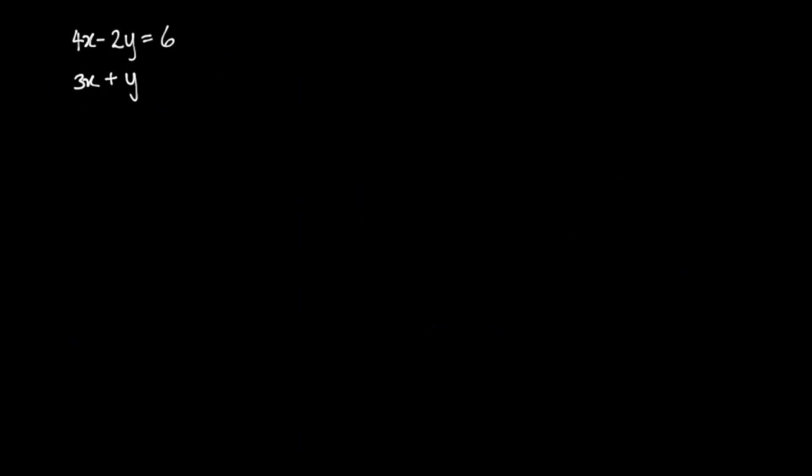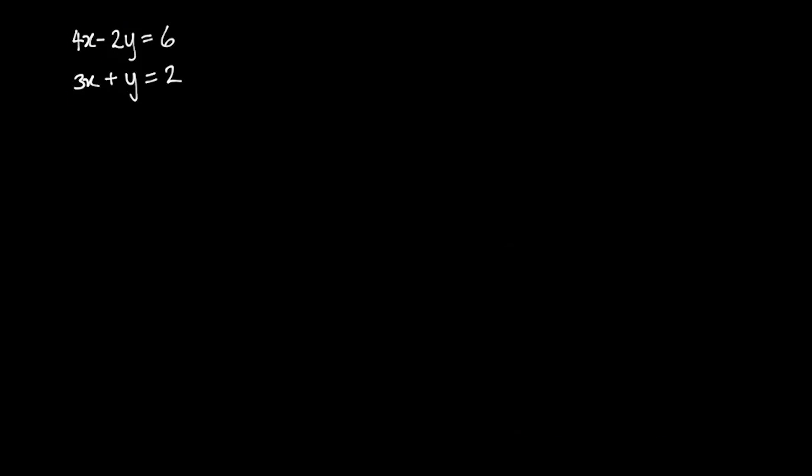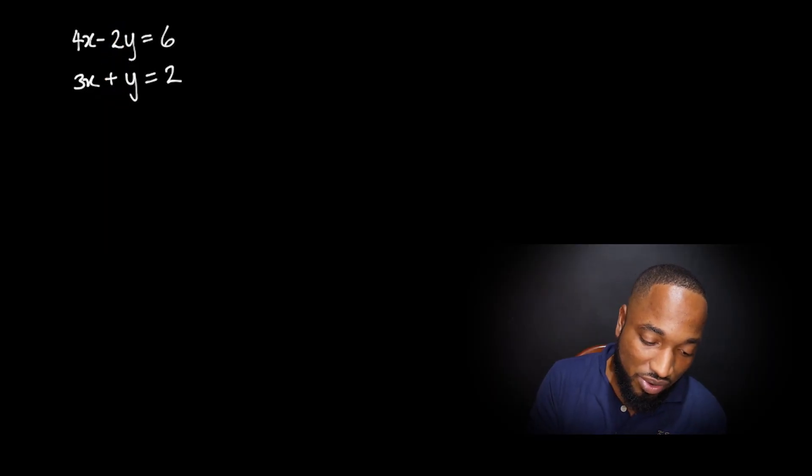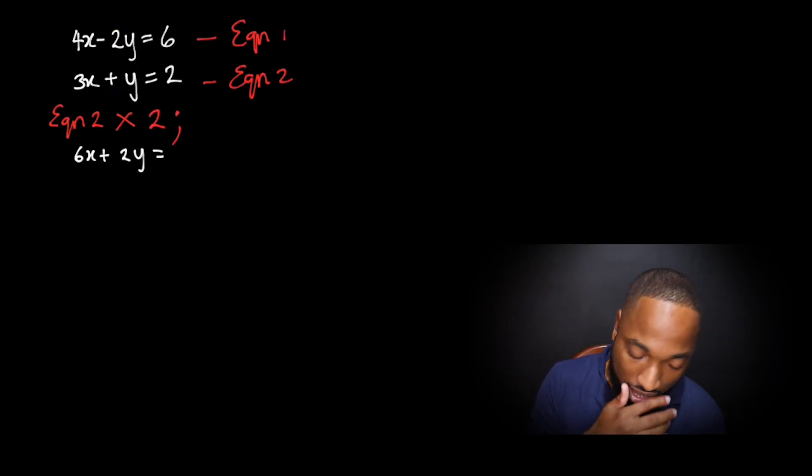Let's check out the next one. You have 4x minus 2y equals 6, and 3x plus y equals 2. That means we can't just automatically eliminate—we need to do a little multiplication first. We're gonna name the equations and then get ready to multiply an equation.